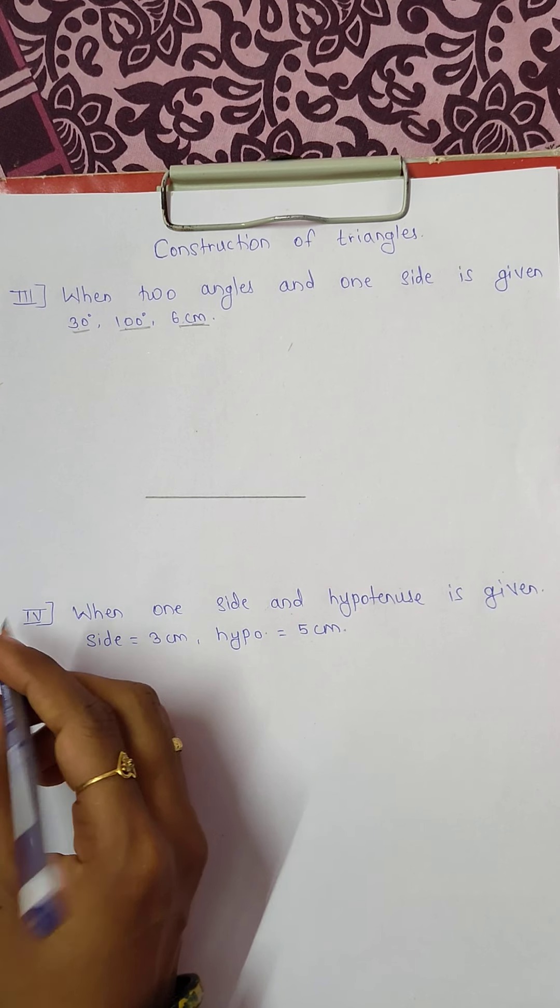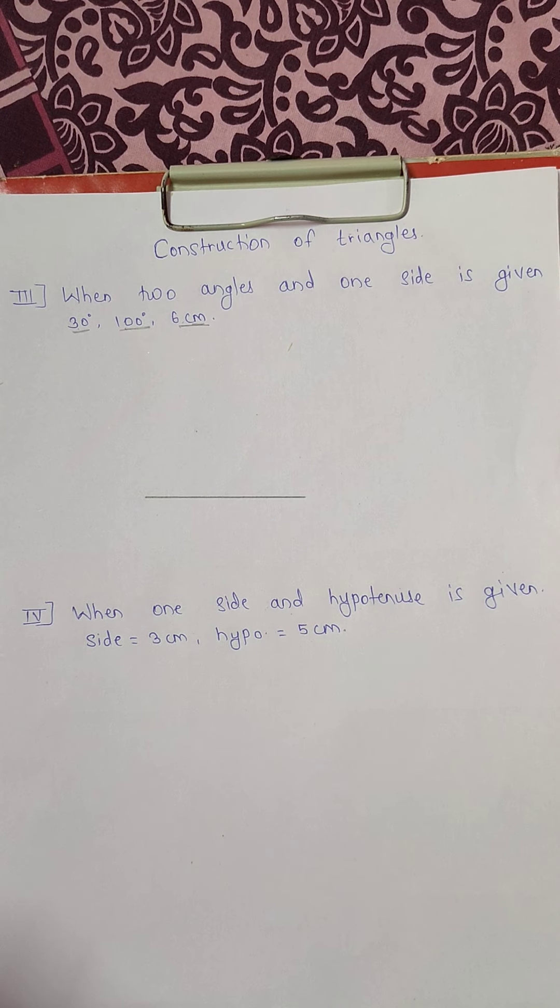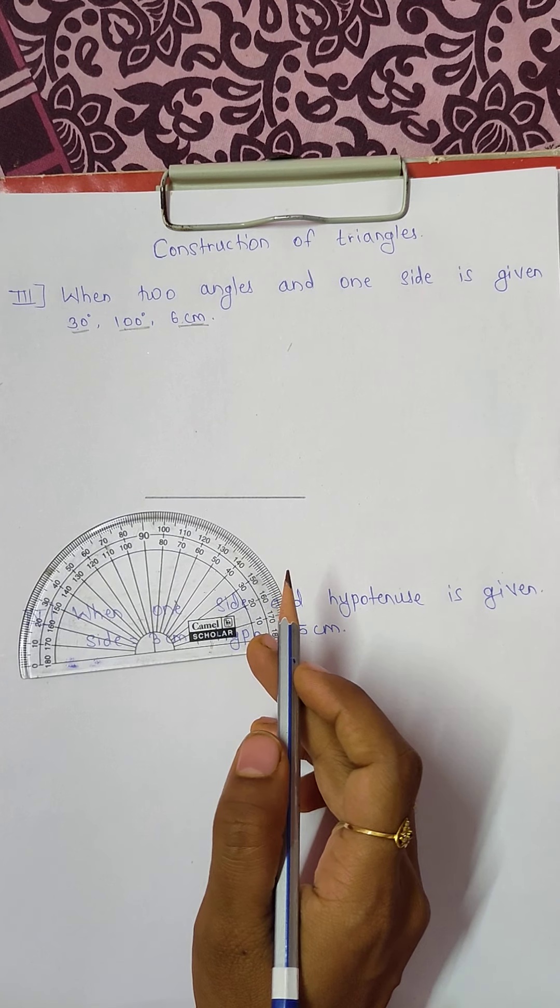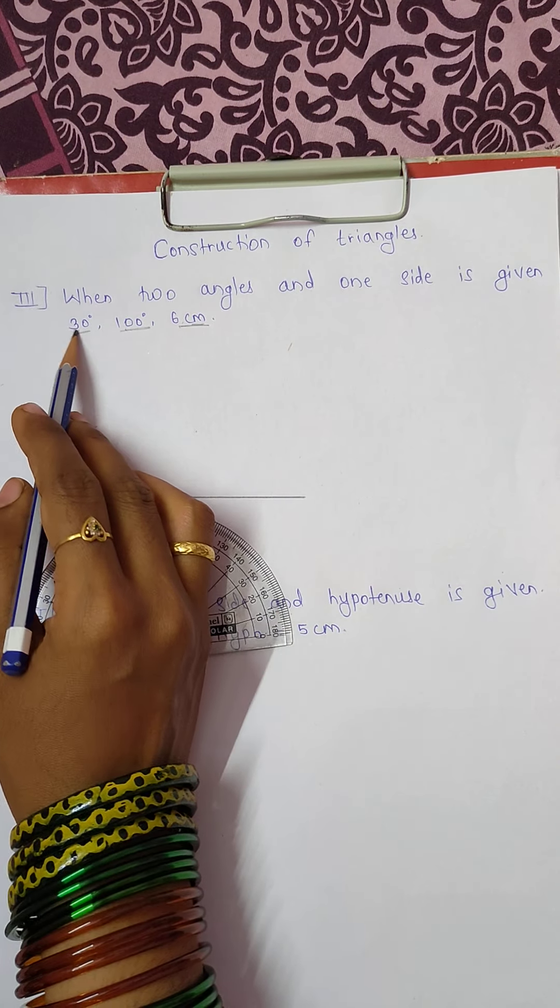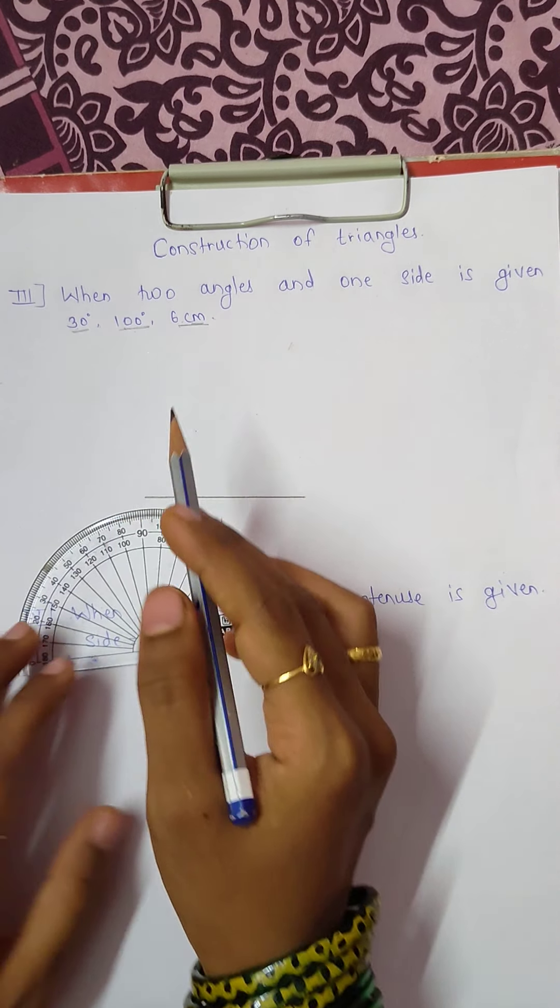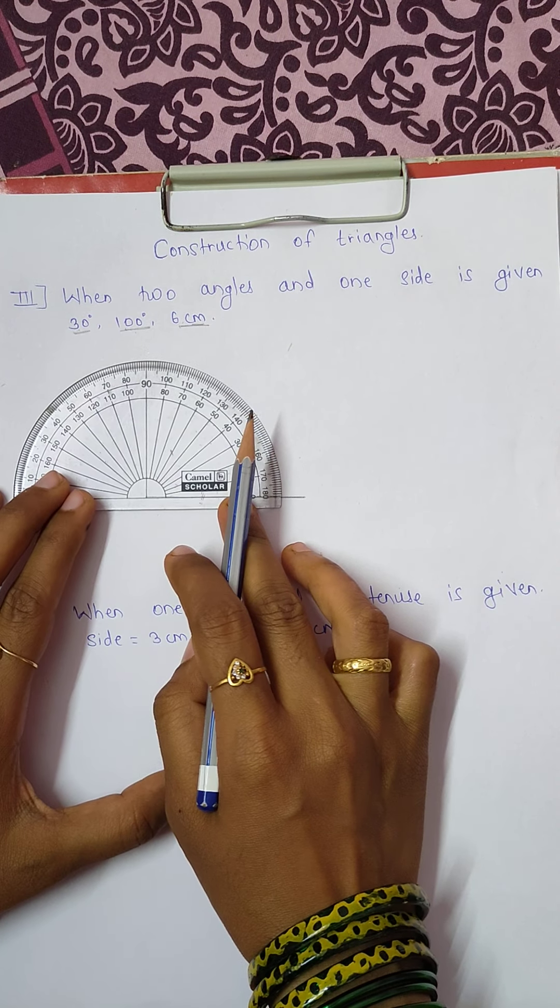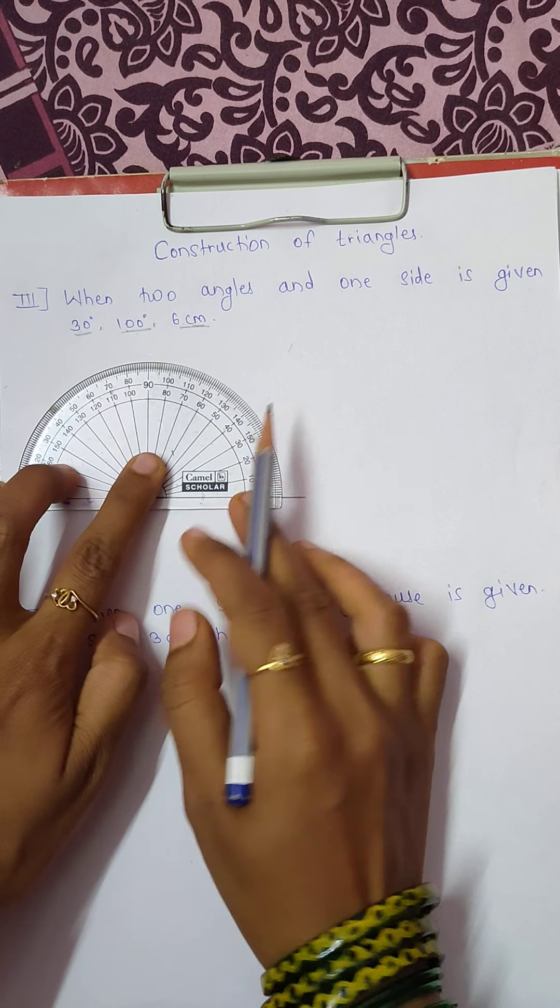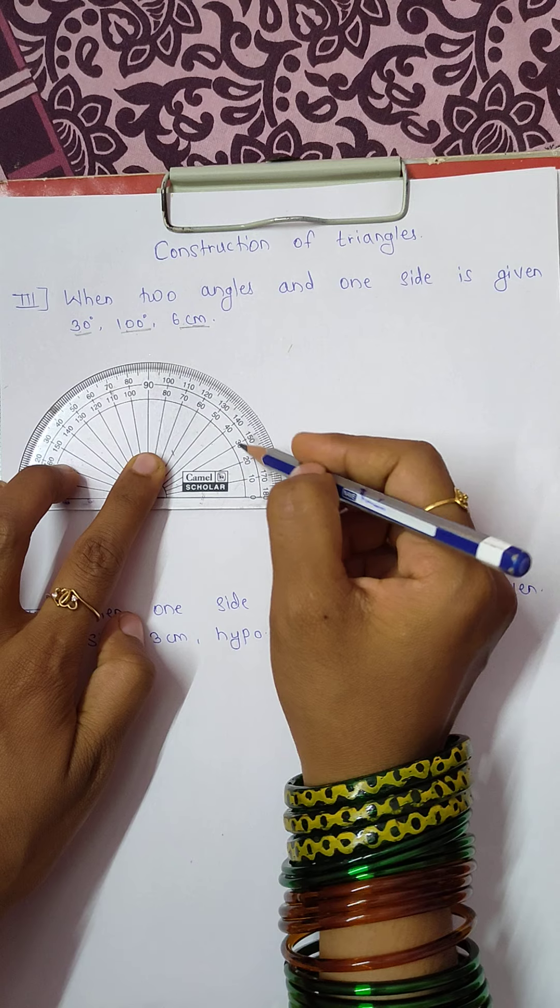After that we will take a protractor and two different angles we have now. One is 30 degrees, another one is 100 degrees. One side we will draw 30 degree angle. 10, 20, 30.